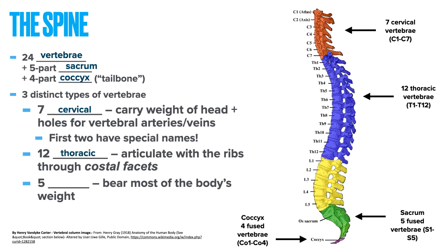The next section is the thoracic vertebrae. There are 12 thoracic vertebrae named T1 through T12, starting just after the cervical vertebrae. And then finally we have the lumbar vertebrae. There are five lumbar vertebrae named L1 through L5, and this area bears most of the body's weight.